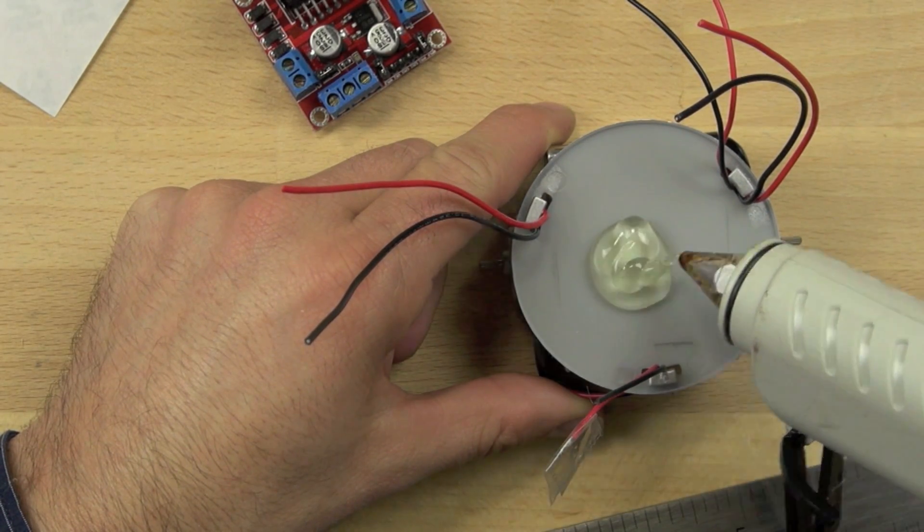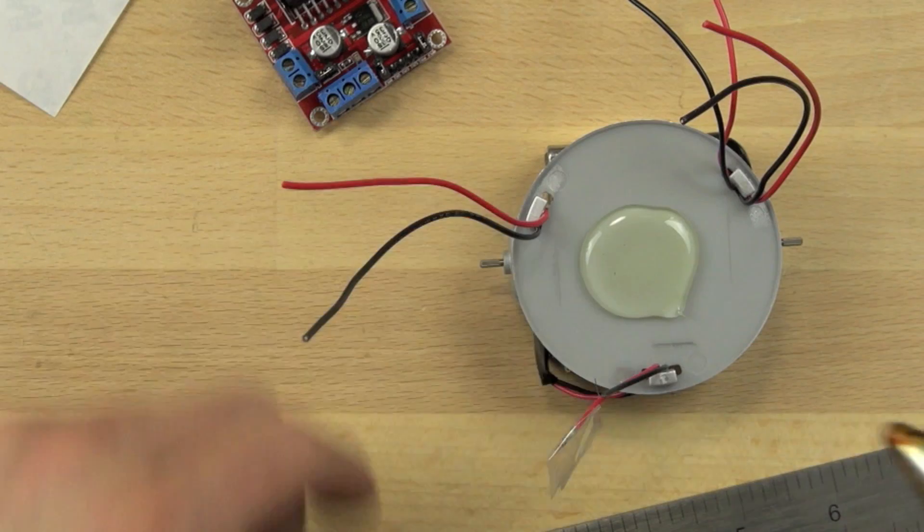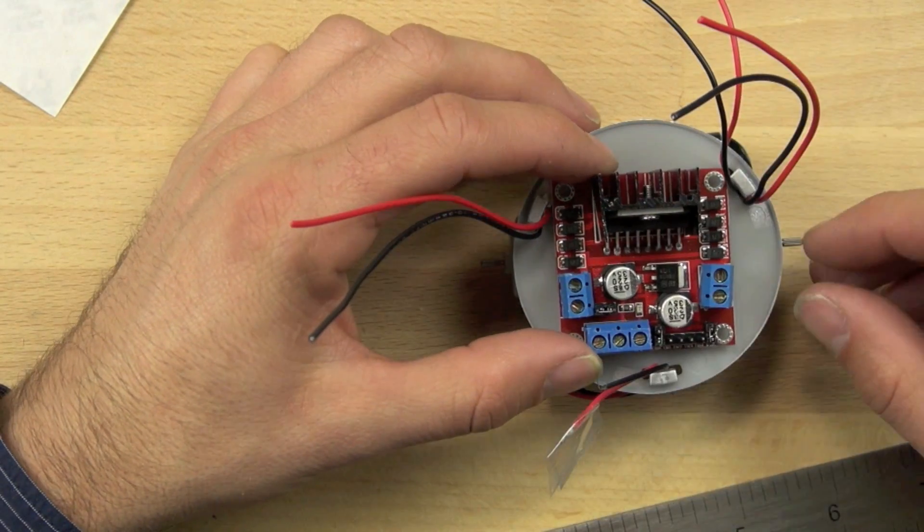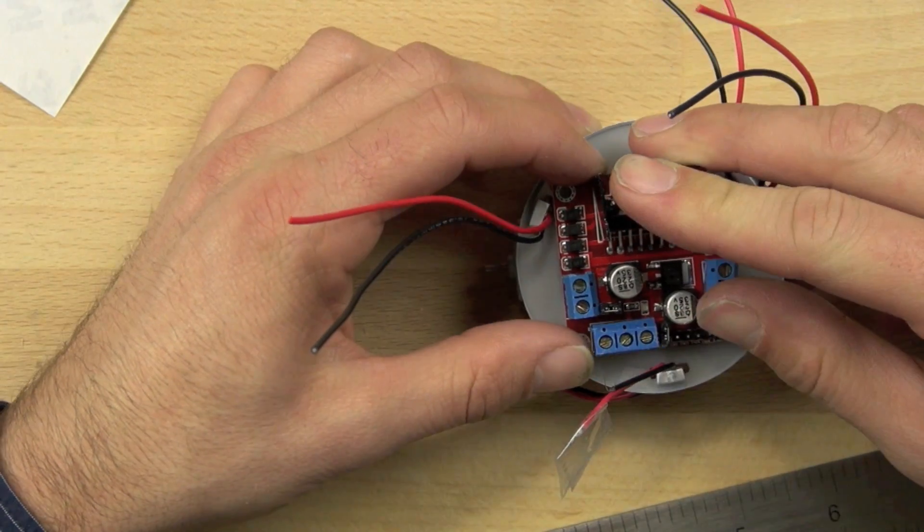You can sort of see the faint outline that I've drawn there and that's going to allow us to make sure that the motor controller is in the center. So we're going to put about a quarter size blob of hot glue down and we're going to put our motor controller right on top of that and line it up with the marks that we've just made.